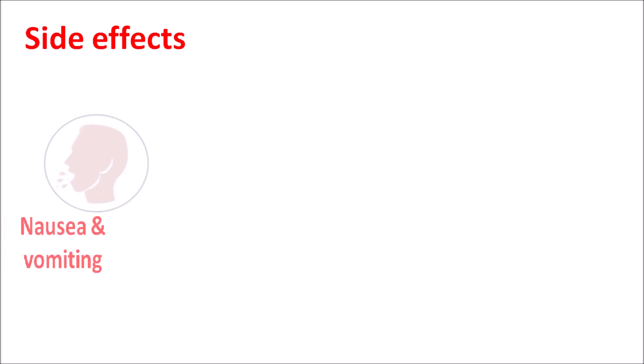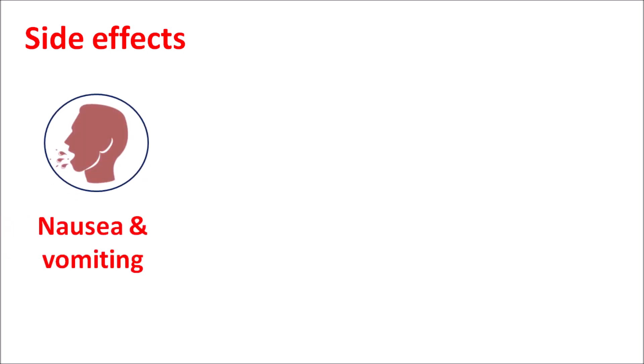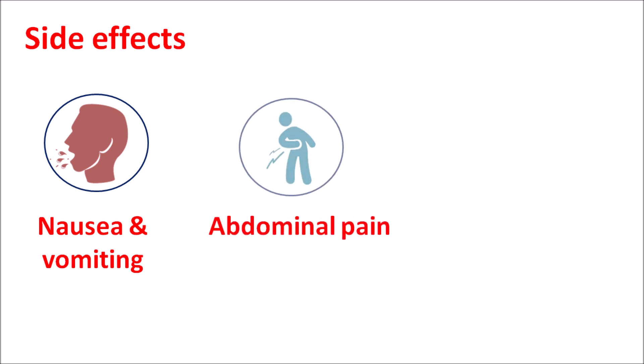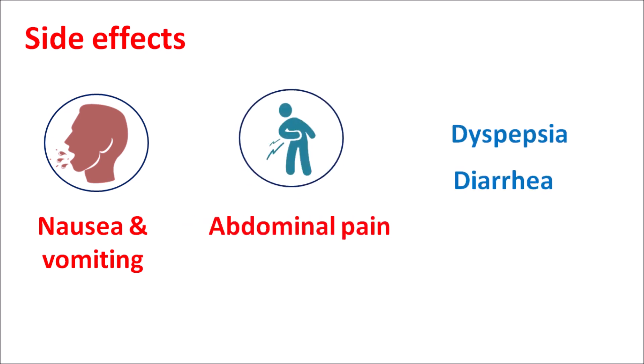The important side effects of sevelamer are mainly gastrointestinal. Due to its resin structure, the drug can produce nausea and vomiting in many patients, which can be controlled after a few days of treatment. It can also produce abdominal pain, dyspepsia, diarrhea, and flatulence. These are the gastrointestinal side effects observed with sevelamer.